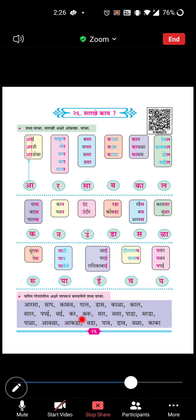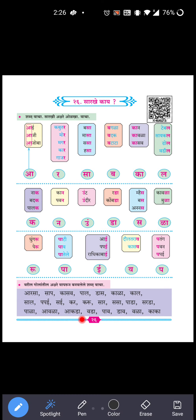Now next, lesson number 26 - Sarkhe Kaya. Sarkhe kaya means 'what is similar?' Shabd vachah sarkhi akshare odhkha - read words and identify similar letters. For example: aai, aaji, aazobah - in all three words, 'aai' is used. So the similar part is 'aai'.